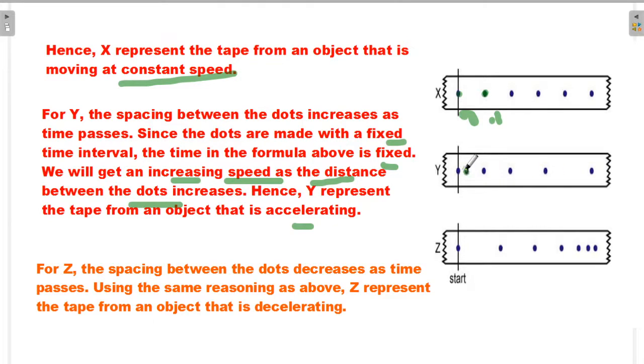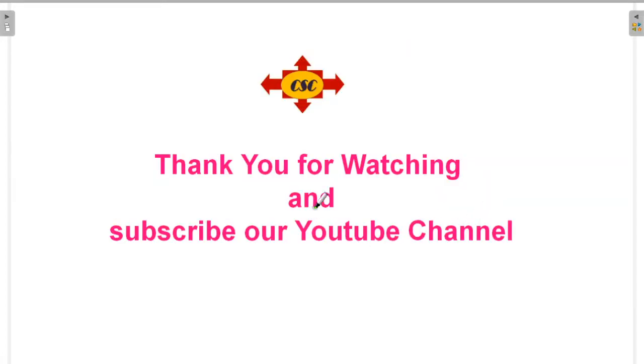With the same time interval, as time passes, the distance between dots increases for Y, which indicates accelerating. For Z, the distance between two dots decreases as time passes, which indicates the object is decelerating. Thank you for watching and subscribe to our YouTube channel.